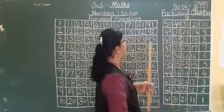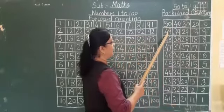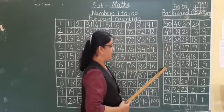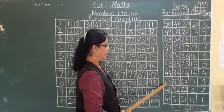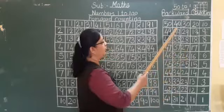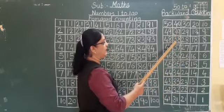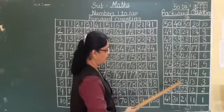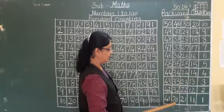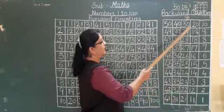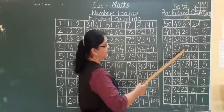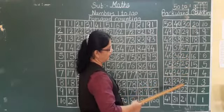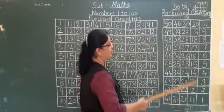Now we will start. 50, 49, 48, 47, 46, 45, 44, 43, 42, 41, 40. 39, 38, 37, 36, 35, 34, 33, 32, 31. 30, 29, 28, 27, 26, 25, 24, 23, 22, 21.